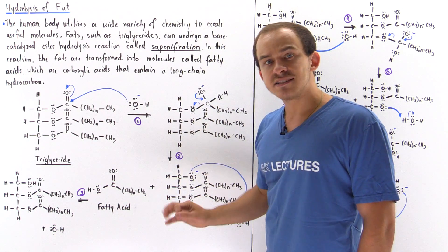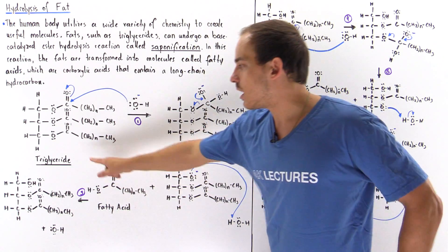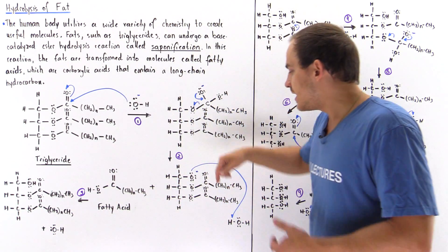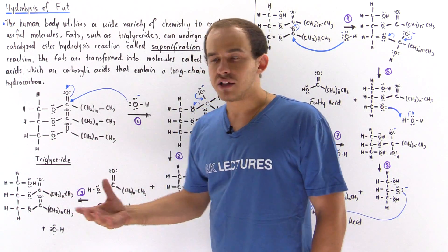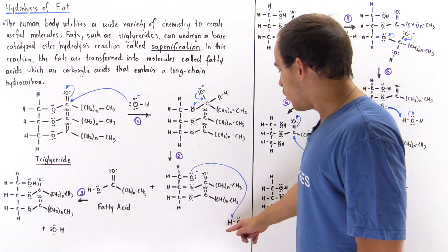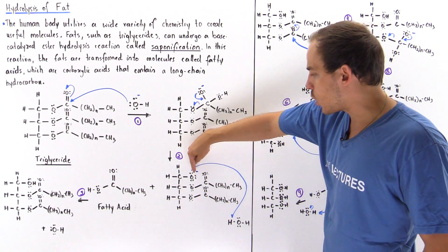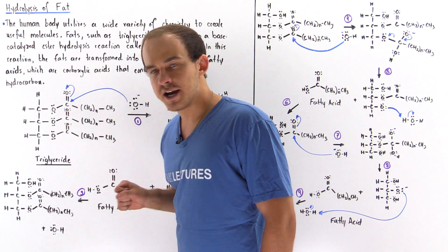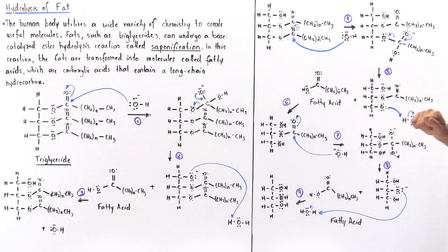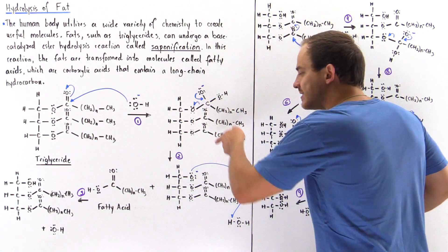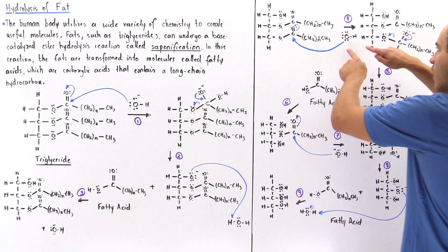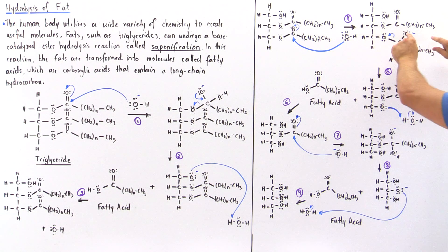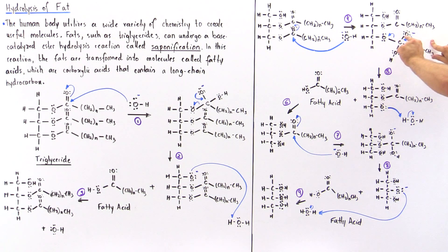In step three, we want to protonate this oxygen. We use either a water molecule or hydronium — let's suppose water — and the water molecule protonates this oxygen, forming a molecule with a protonated oxygen region. We then react this molecule again in the same identical steps. In step four, our hydroxide attacks this carbon nucleophilically, displacing the pi bond and placing the negative charge onto this oxygen.